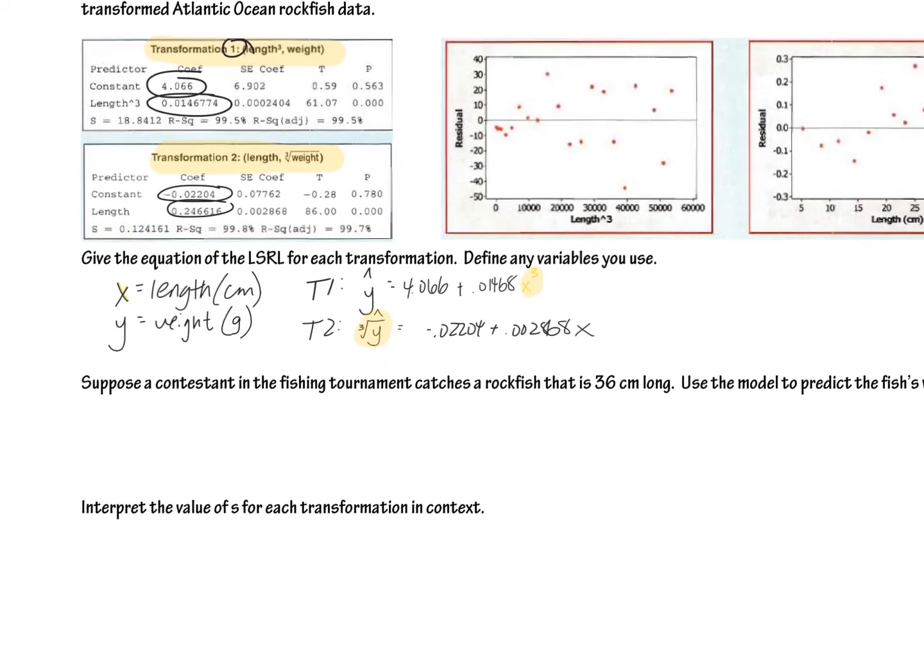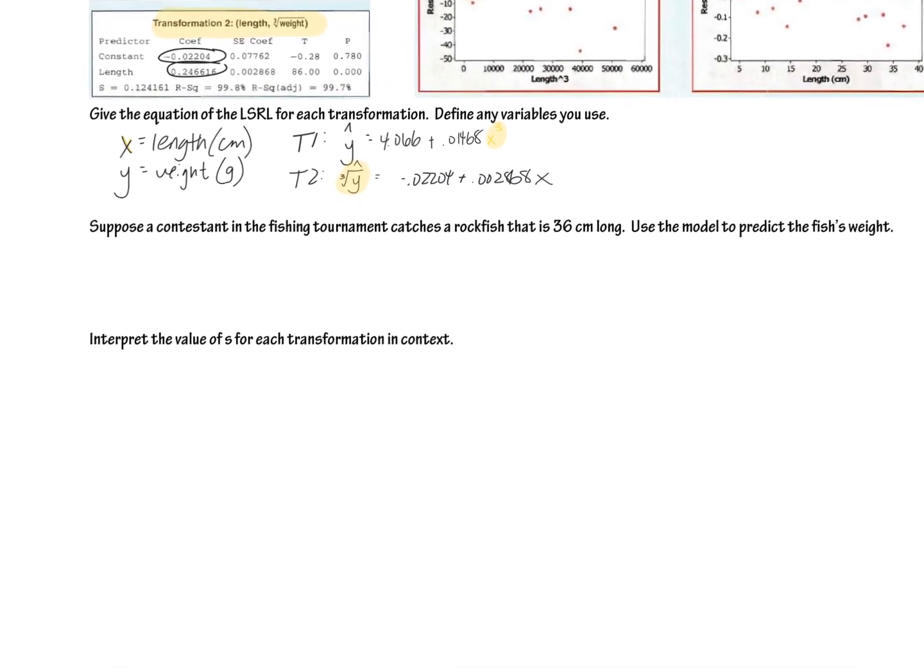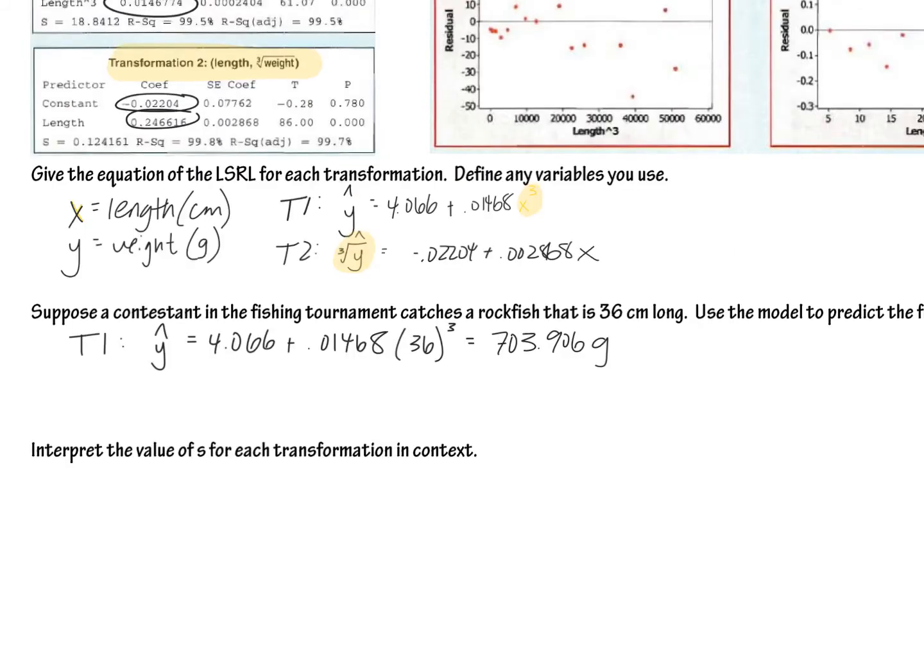So it says, suppose a contestant in the fishing tournament catches a rockfish that is 36 centimeters long. Use the model to predict the fish's weight. So what we can do is we can take this 36 and we can plug it into this x and predict the weight, and we can also plug it into this x and predict the weight. So I'm going to kind of write out that first one here. So here's what that work looks like just for the first transformation. But this first equation here, what I did is I plugged the 36 in for x, but just make sure you cube it because we cubed all of the x values in order to perform that transformation to have a straight line so that I could actually use this LSRL equation to make a prediction. And that means that this fish is going to weigh 703.9 grams.